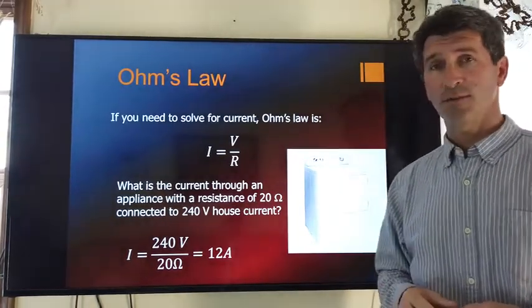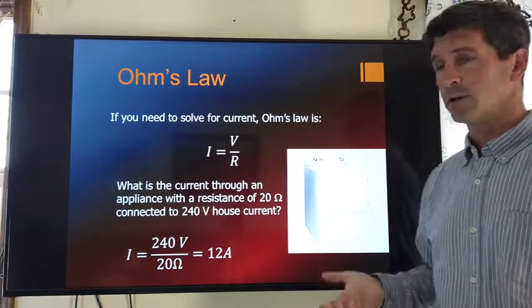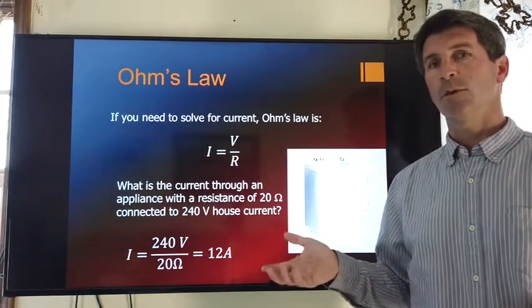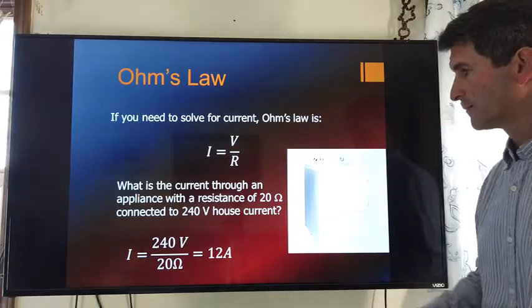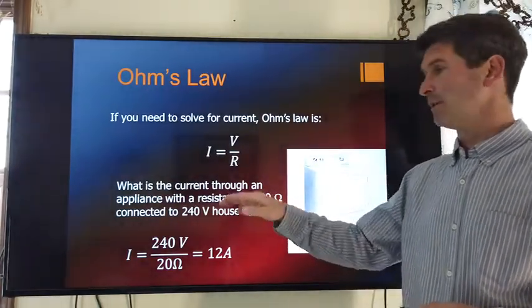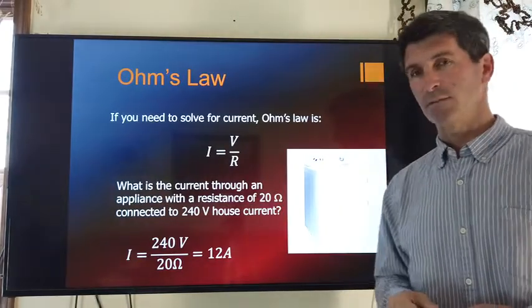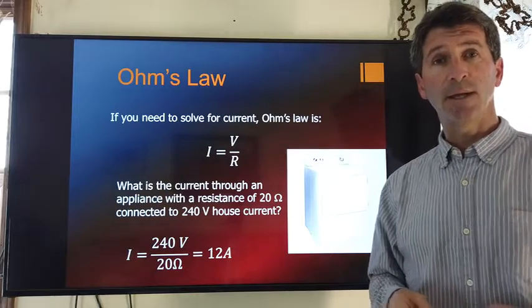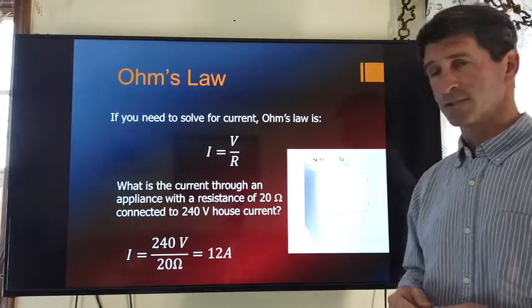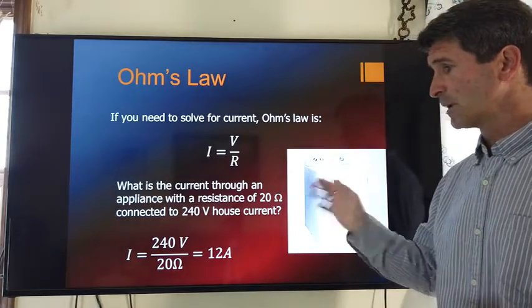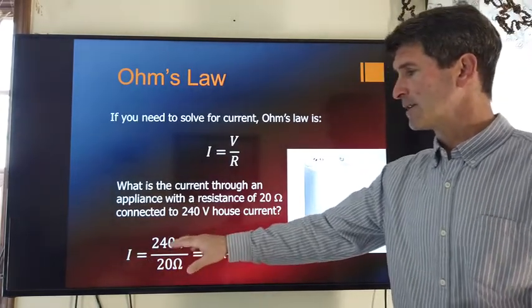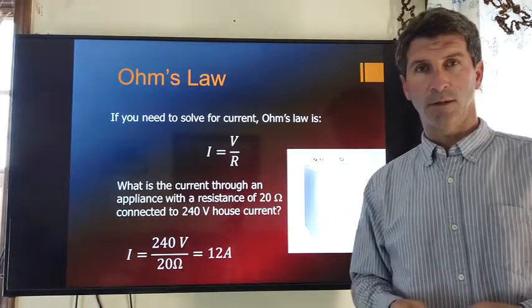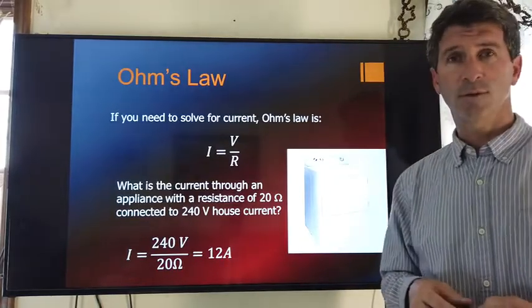Some of the larger appliances in your house will actually be hooked to 240 volts as opposed to most outlets being 115, 120. At 240 volts with resistance of 20 ohms, maybe the nichrome heating elements have a total resistance of 20 ohms. We can calculate the current. I is equal to V, 240 divided by R, 20. And that requires 12 amps of current to run the dryer.